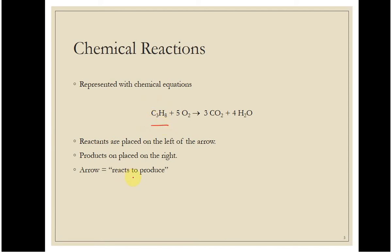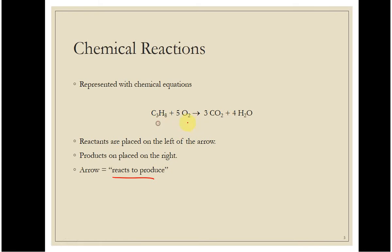Now you don't know how to name this yet, but that's okay. I'm going to tell you that this is propane, this is oxygen, carbon dioxide, and water you do know. The way that we write a chemical reaction is we have the reactants — the things that are our starting material — on the left, our products or ending material on the right, and then we have this arrow, which means 'reacts to produce.' So here we have propane reacting with oxygen to produce carbon dioxide and water, or propane plus 5 oxygen reacting to produce 3 carbon dioxide and 4 waters.